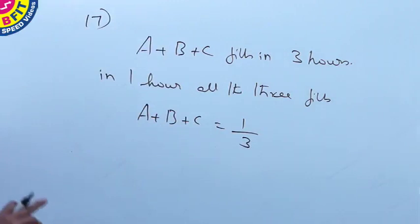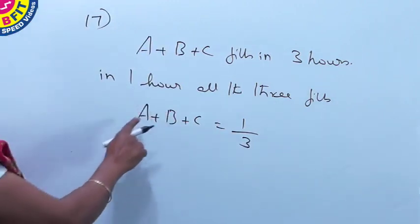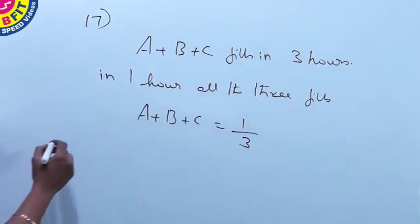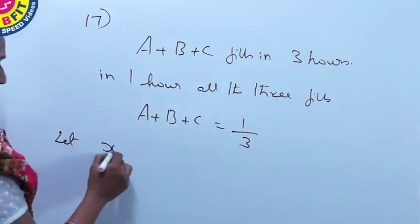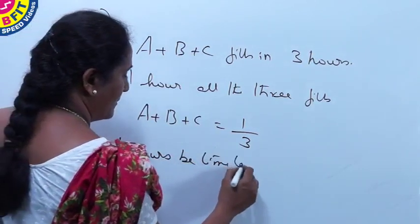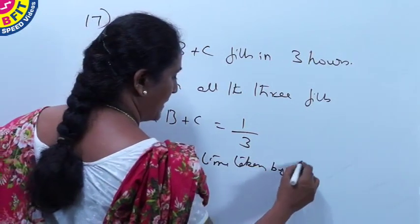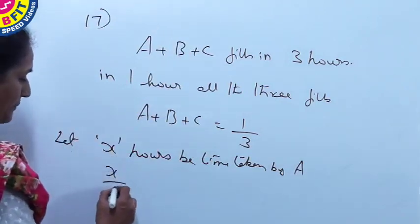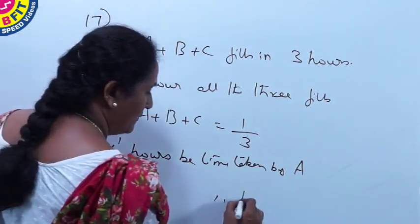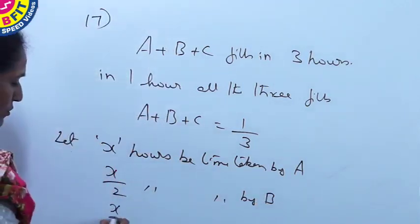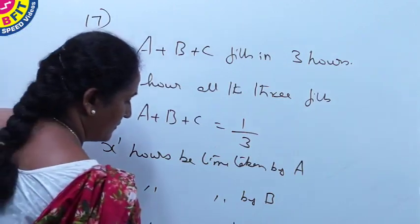So it is given that A takes twice the time taken as B and A takes thrice the time taken as C. So we have to take the base for A. So let X hours be time taken by A. So if X is time taken by A, time taken by B will be half of the time, X by 2 hours, and time taken by C will be one third of time taken by A.